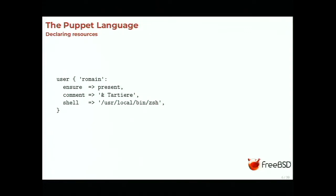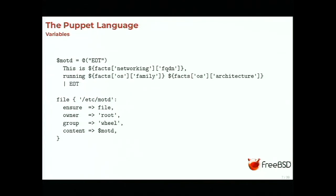If password is not present, Puppet will just not handle it — it will leave it as is. This configuration is completely static, but we can do things more dynamically using variables, because we are using the Puppet language. Here we have a file resource managing the /etc/motd file, and the content of that file is set to a variable, MOTD, defined at the top of the slide. The MOTD content contains two lines of text referencing the fact networking.fqdn — the fully qualified domain name of the node for which we are building the catalog — and the facts os.family and os.architecture.